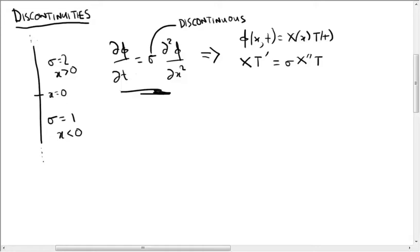Okay, and dividing by X T this gives X double prime times sigma over X equals T prime over T. And as usual this side only depends on x, this side only depends on t, so the whole thing is a constant.